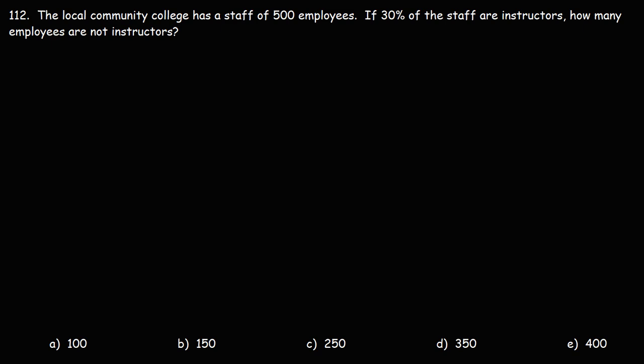Number 112. The local community college has a staff of 500 employees. If 30% of the staff are instructors, how many employees are not instructors? So let's start with the number of employees that we have in the college — there's 500. So 30% are instructors.